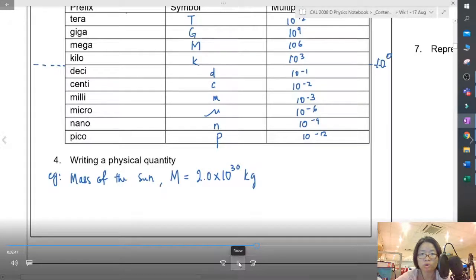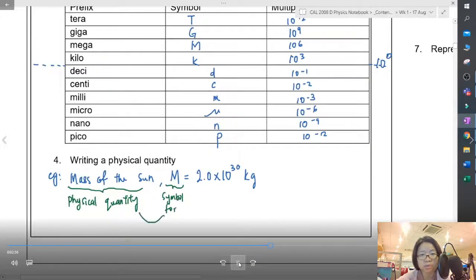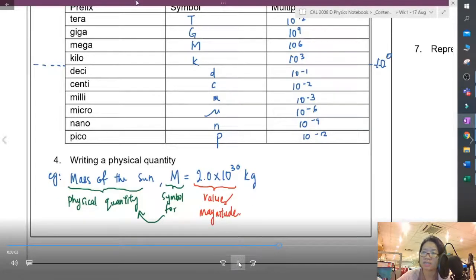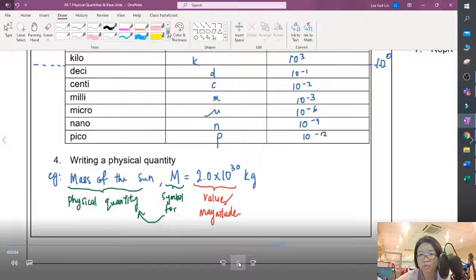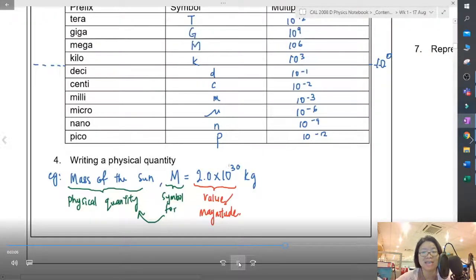If we write a physical quantity, for example the mass of the sun, we will represent it with a symbol - let's say big M - and then we write the value. The mass of the sun is around 2 times 10 to the power of 30 kg. So the mass of the sun is our physical quantity that we measure; this is the symbol for your physical quantity.